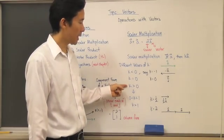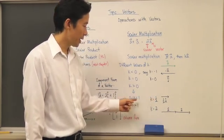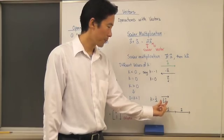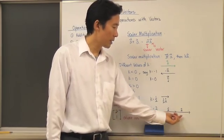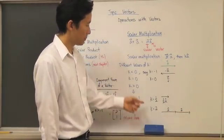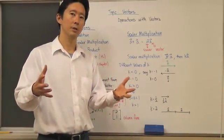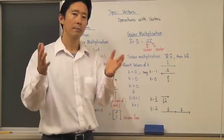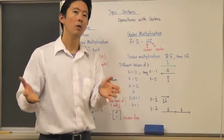For values of k greater than zero, when k equals one half, the magnitude of the vector is half as long. When k is greater than one — say k equals two — you get 2a, which is twice the length. So scalar multiplication affects the magnitude, and the direction only has two possibilities: either the same direction or the exact opposite direction.